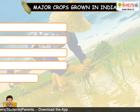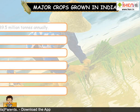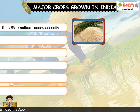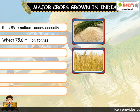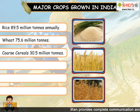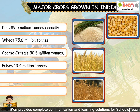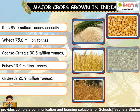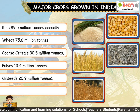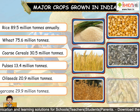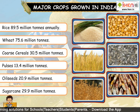Major crops grown in India: India grows 89.5 million tons of rice annually, 75.6 million tons of wheat, 30.5 million tons of coarse cereals, 13.4 million tons of pulses, 20.9 million tons of oilseeds, and 29.9 million tons of sugarcane.